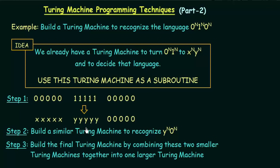We may have to modify that Turing machine a little bit, because in that Turing machine, after finding the last 1 it was searching for a blank symbol. But here we don't have a blank symbol — we have a 0 that follows. So you will have to modify it so that after the last 1 it finds a 0 but not a blank symbol. That is not a big task — you can do it easily. After doing that, all the zeros are replaced with x and all the ones with y, while the trailing zeros remain unchanged.